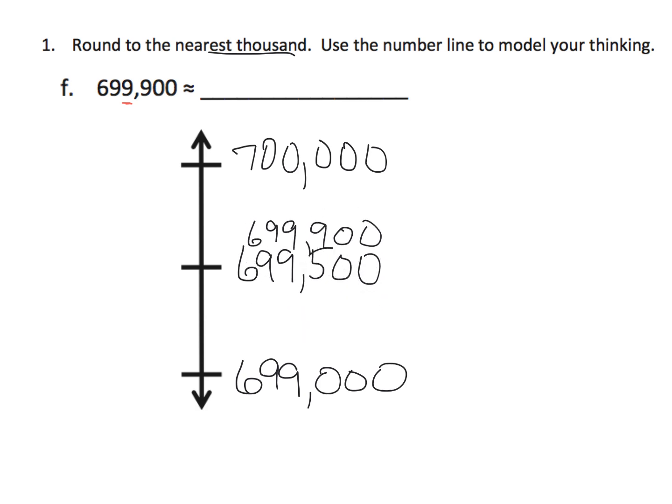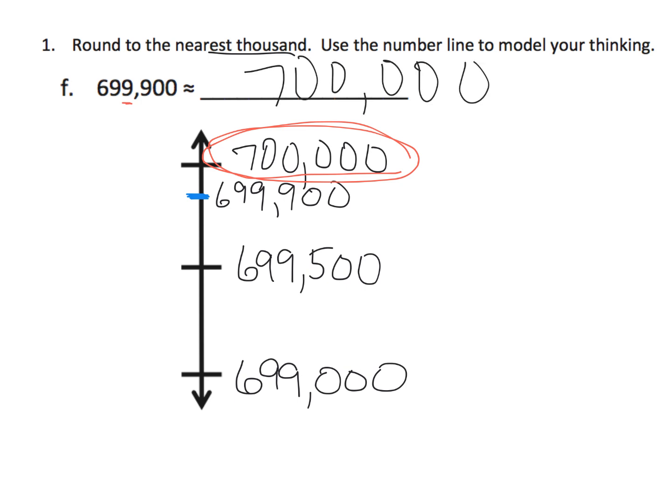Because that nine is larger than the five, 900 is larger than 500, it's going to go up here. And if I wanted to, I would say it's going to be kind of closer to the 700 than it is going to be to the 699,500. We don't have to be precise, but I'm going to put it right there. And that tells us that when rounded to the nearest thousand, it's going to be 700,000.